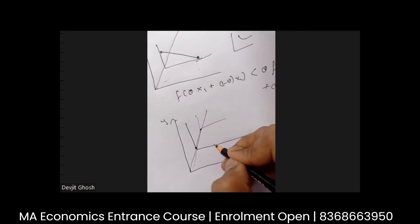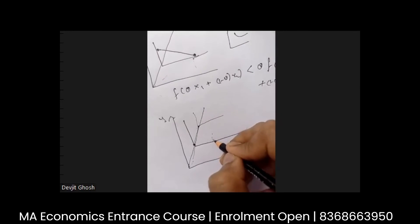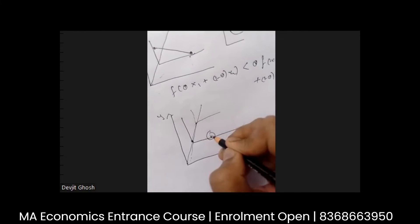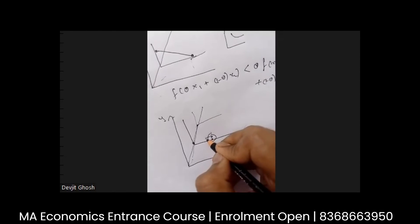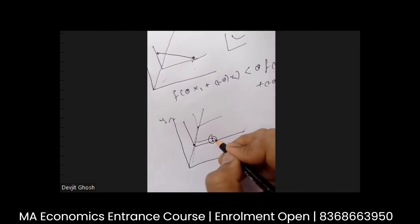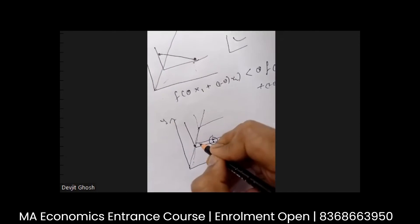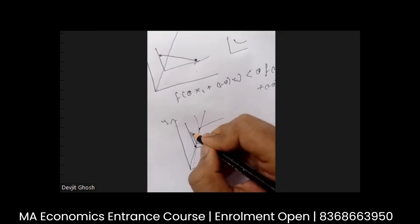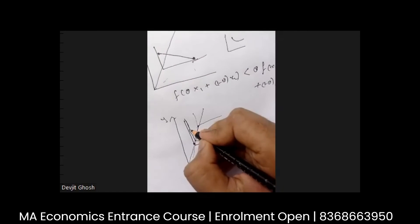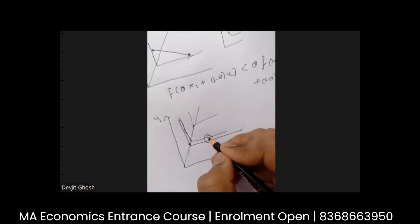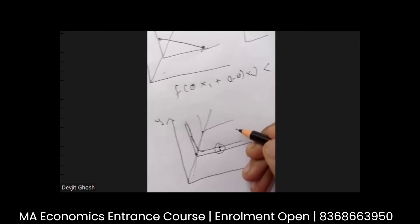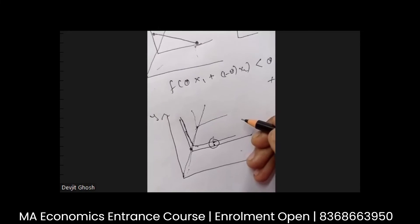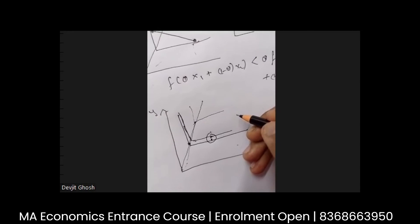So if I take a point close to this point, say, take a point like this, I can join this line and say that it is a higher IC, it's a higher IC. Okay. Now, finally, we want to prove that it is not monotonic. I got what you're doing.